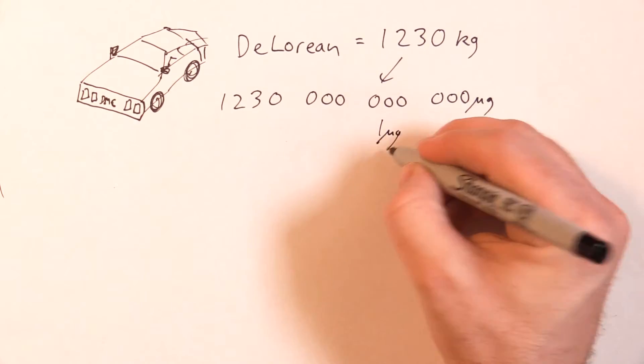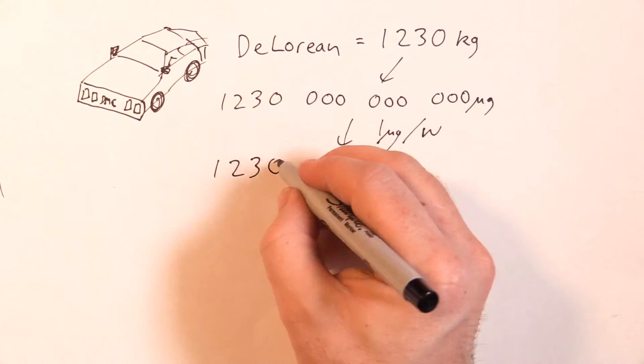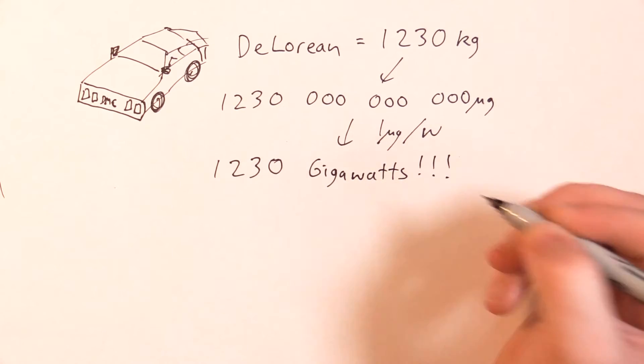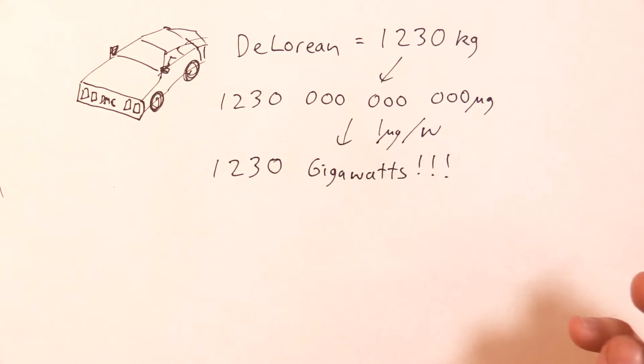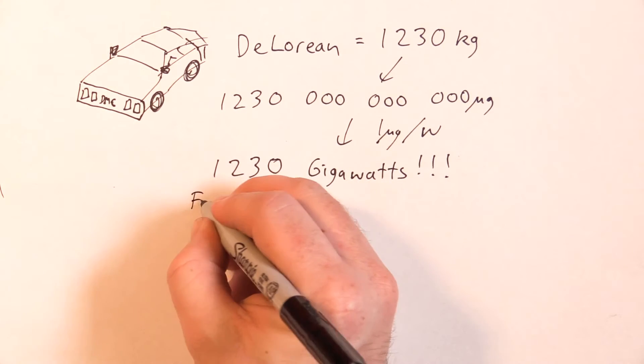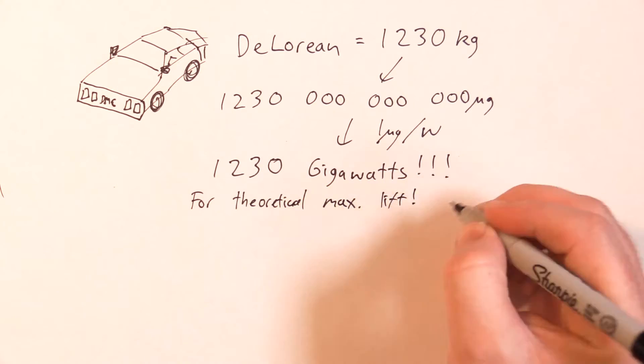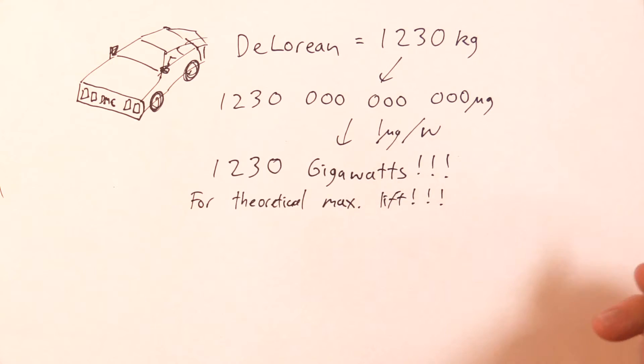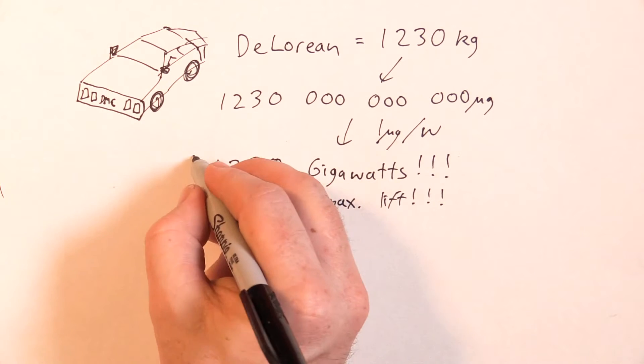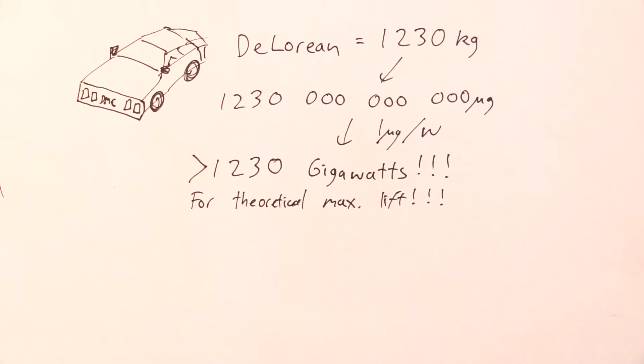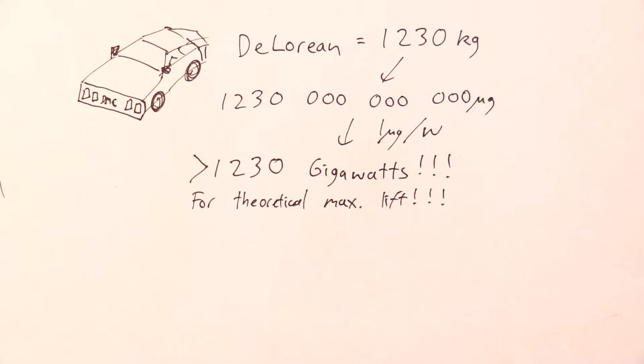If one watt of energy gets you one microgram of lift, then in the very best case scenario you're looking at over a trillion watts to lift a single DeLorean. So that's a huge amount of energy. It's 1230 gigawatts, or should we say gigawatts, and that's equal to the same amount of large power stations. So that's real power stations, and not alternative green energy hippie ones.